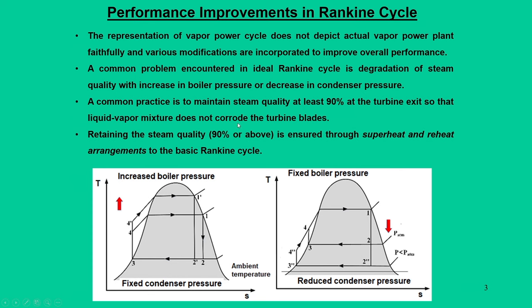First of all, when you deal with an ideal Rankine cycle, we say that saturated steam at state 1 expands in the turbine. During this expansion process, we land off at the exit of the turbine with steam quality not adequate with respect to operating requirements for the turbine. Turbine blades are designed to operate with steam in vapor state, but if the quality of the steam is not adequate, it normally erodes the turbine blades.